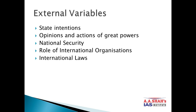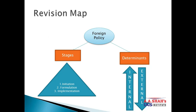Now, this is a revision map of what we have studied. Foreign policy definition: it is a rational pursuit towards other states, and pursuit defines the actions and behavior towards other states. We discussed stages: initiation, formulation, and implementation. We studied determinants — internal and external. These are the basic important concepts of foreign policy. Next, we will see what global events resulted in the introduction of foreign policy in the global order.